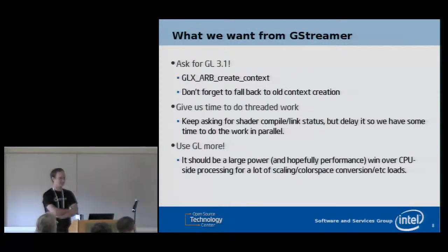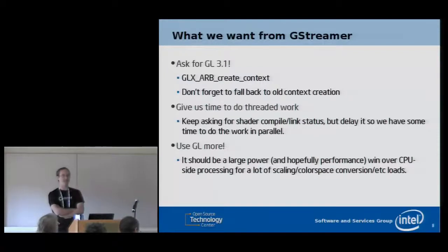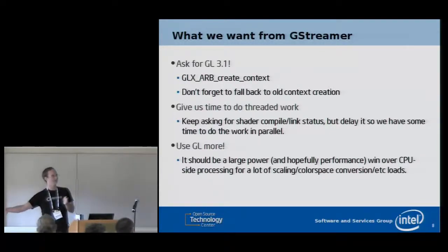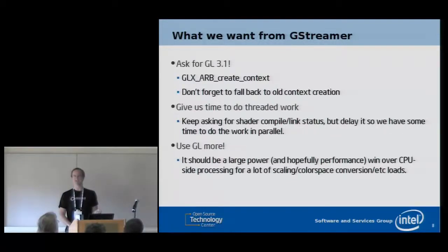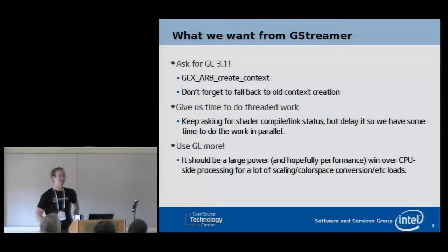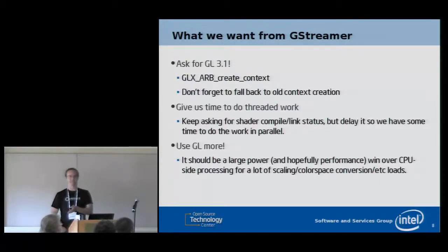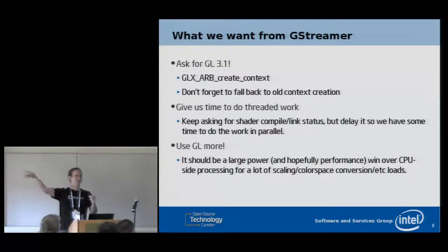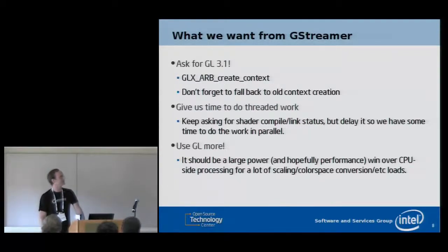To bring things on topic: what do we want from GStreamer? The most important thing is to ask for GL 3.1. If you have the option of using any version of GL, please use 3.1 or better. If you ask for 3.1, we're allowed to give you a 3.3, 4.0, or whatever context, but we can't give you one of those unless you ask for at least 3.1. That's because of the deprecated functionality that was removed. Of course, don't forget to fall back to creating an old context if 3.1 isn't supported. Also, give us time to do threaded work — try to reduce glgets, because once we do threaded dispatch, every glget will be a synchronization stall on the worker thread.